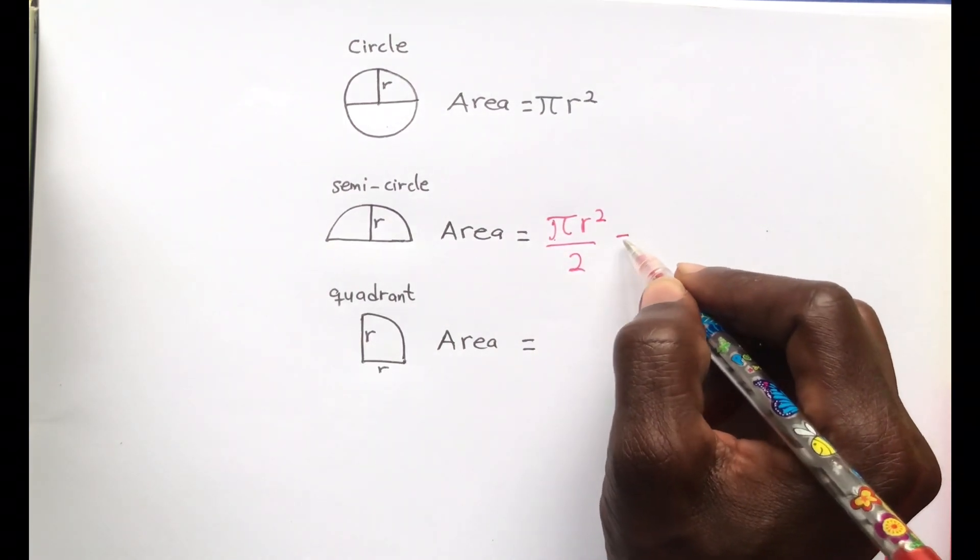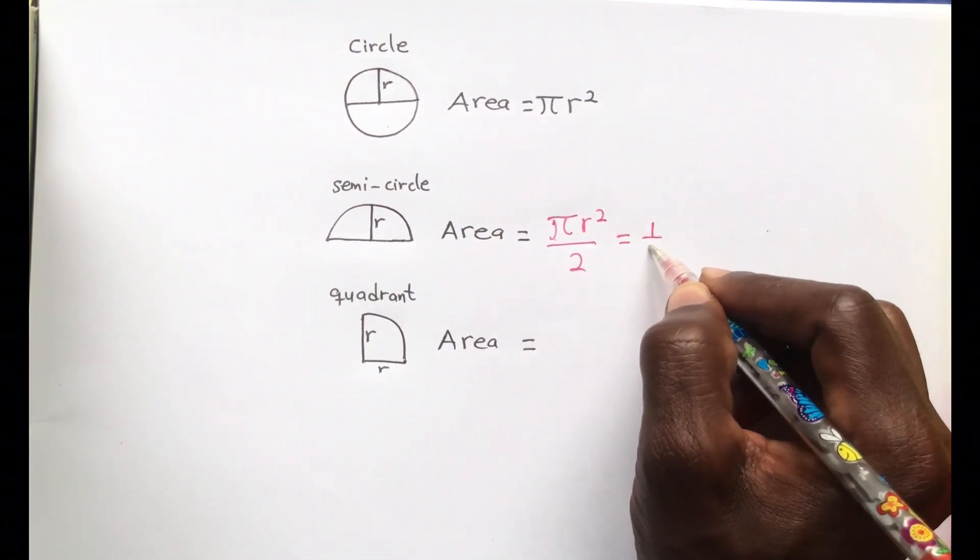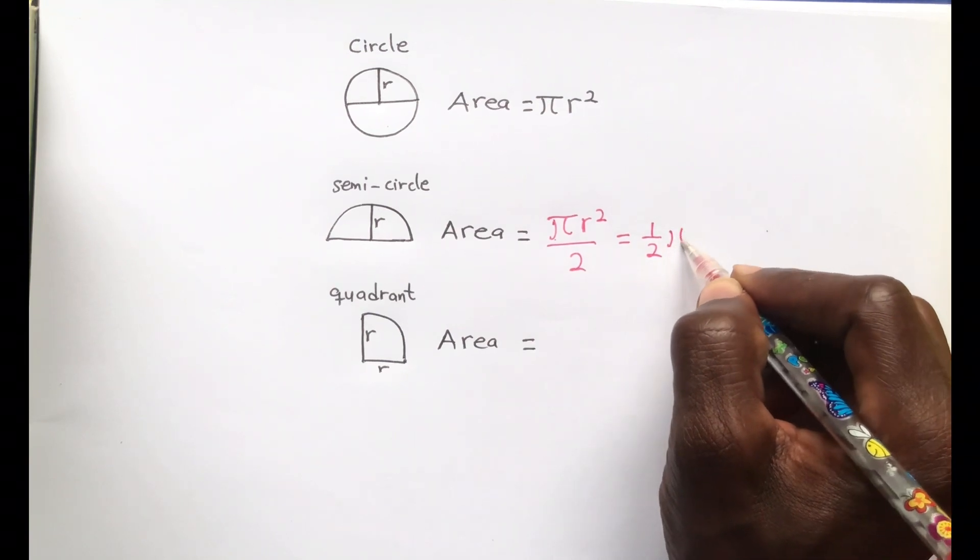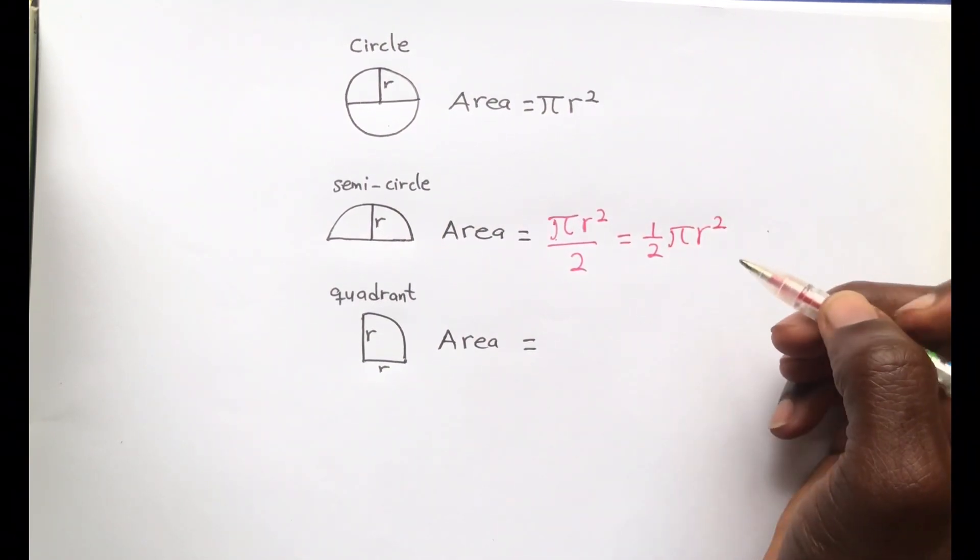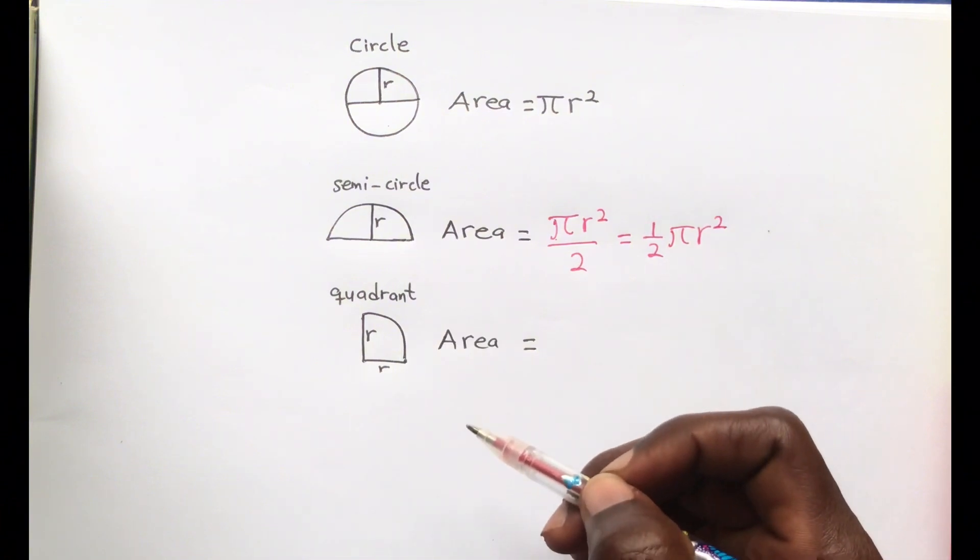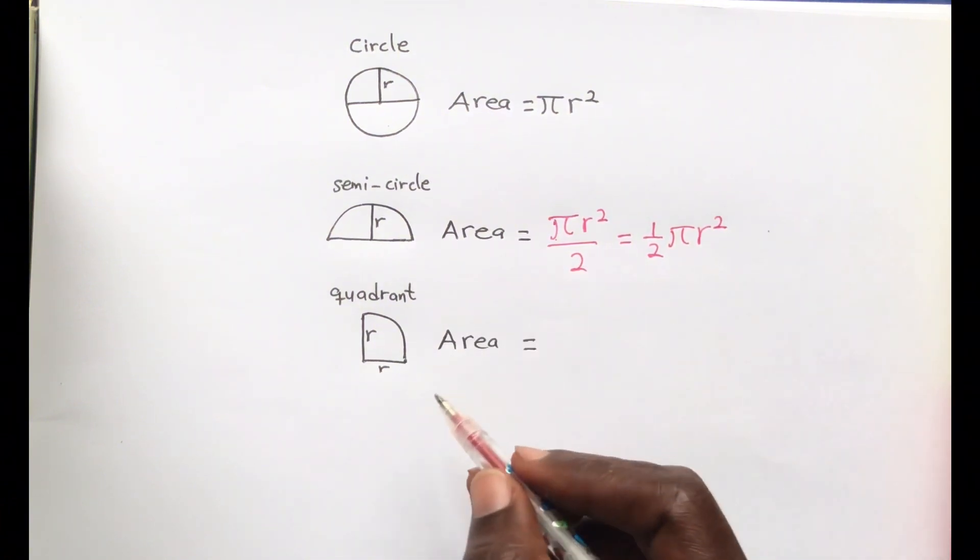So in simple terms, it is half of the area of a circle. That is the area of a semicircle. And then for a quadrant,